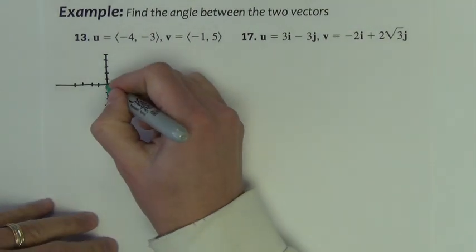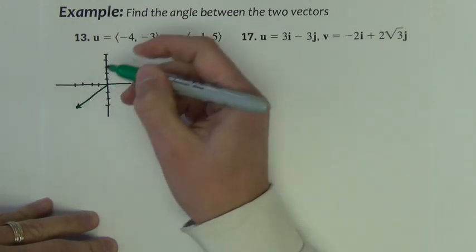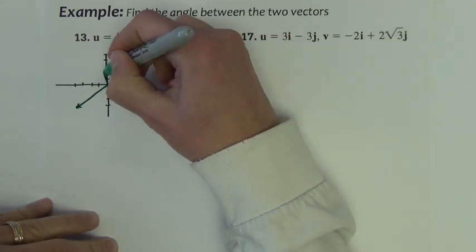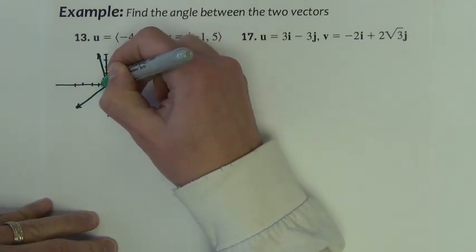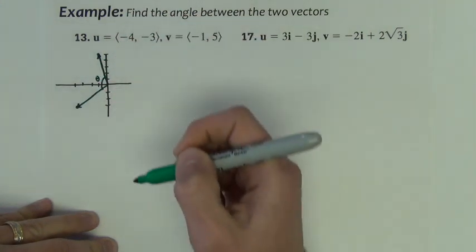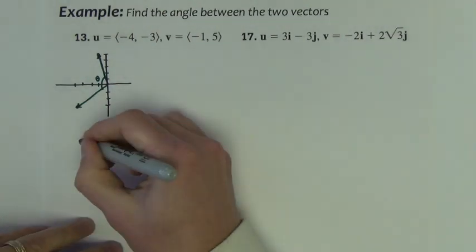So we've got (-4, -3), which kind of looks like that. We've got (-1, 5), which looks like that. We're trying to find that angle between the two vectors. Looks kind of like 90, maybe a little bit bigger than 90. Let's see.